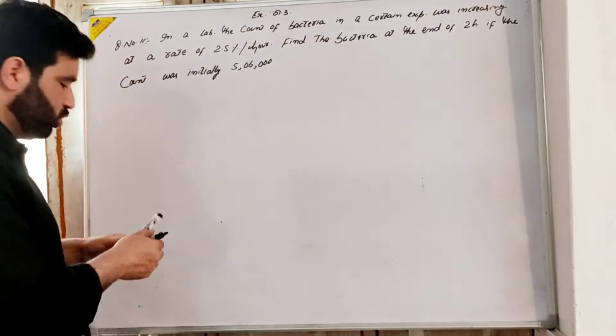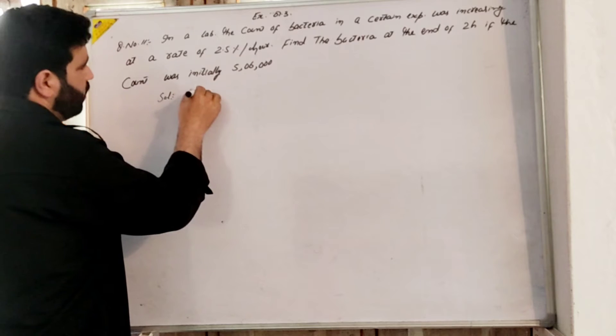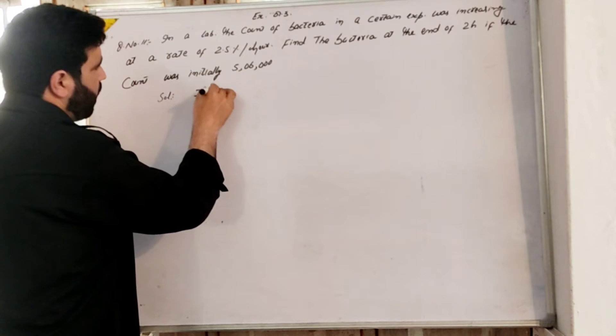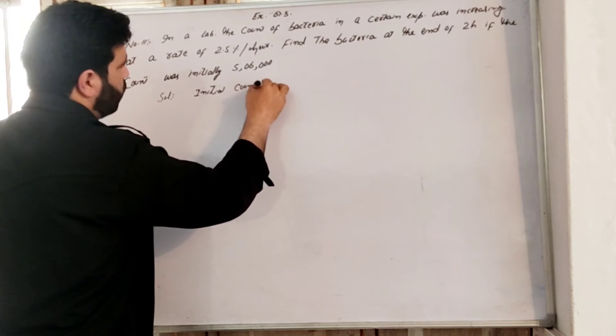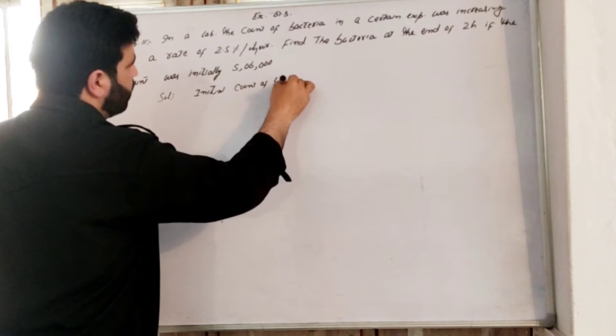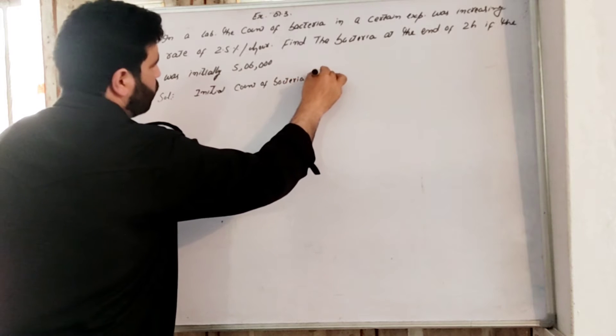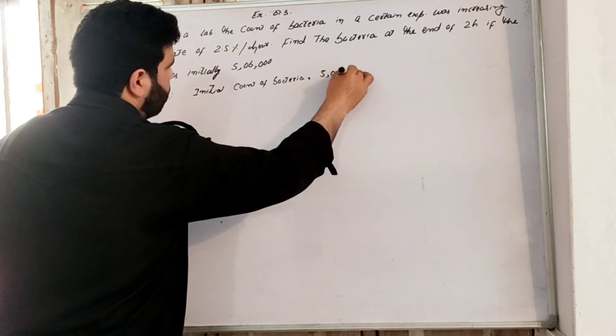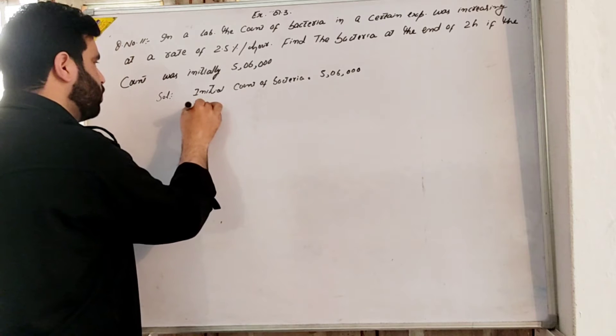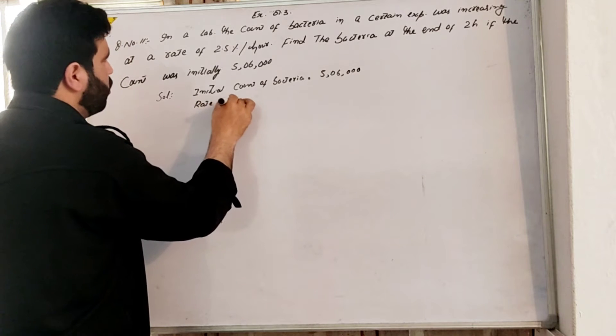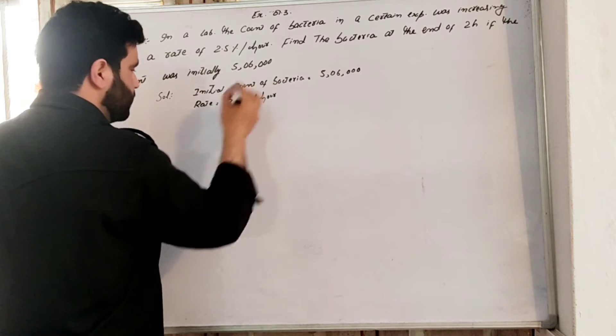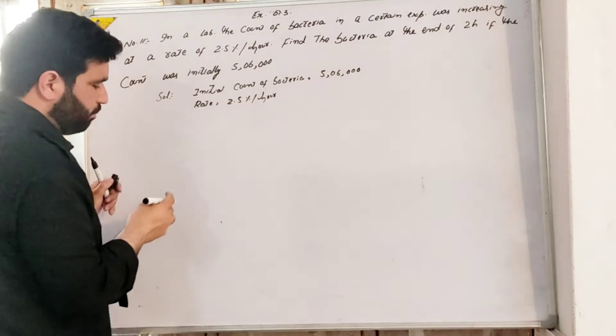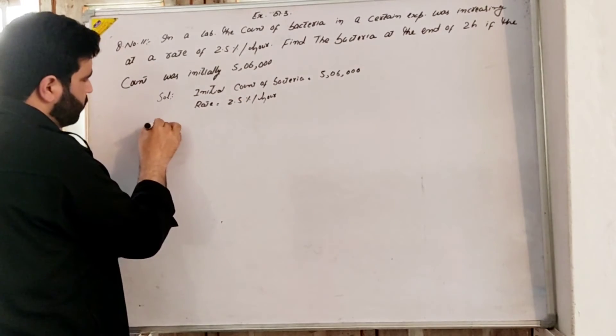Solution: The initial count of bacteria is 506,000. The rate is 2.5 percent per hour. We need to find the bacteria at the end of 2 hours.